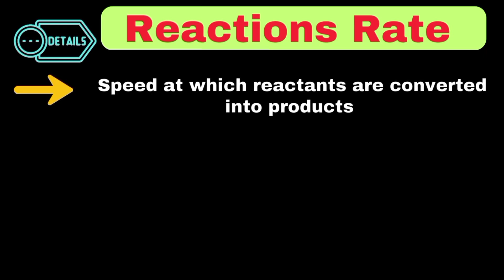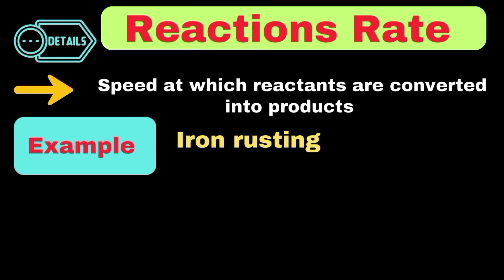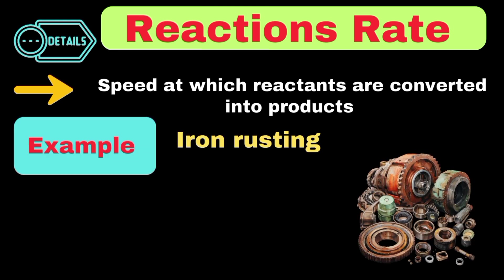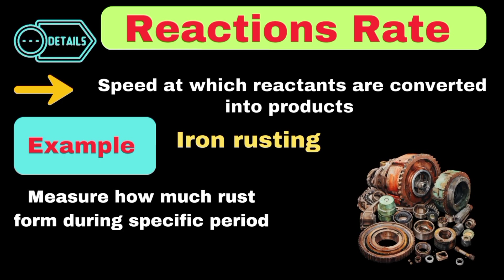To understand this deeply, let's take the example of iron rusting. When iron reacts with oxygen in the presence of moisture, it forms rust. We can measure this reaction rate by determining how much rust forms over a specific time period, just like measuring the speed of a car by seeing how far it travels in a certain time.